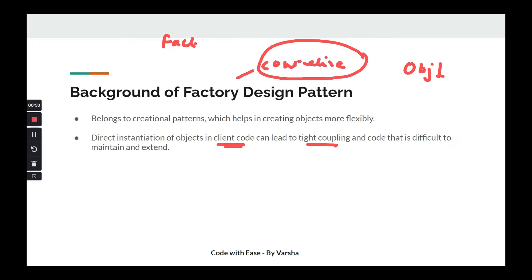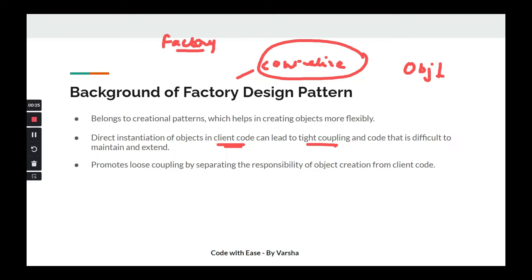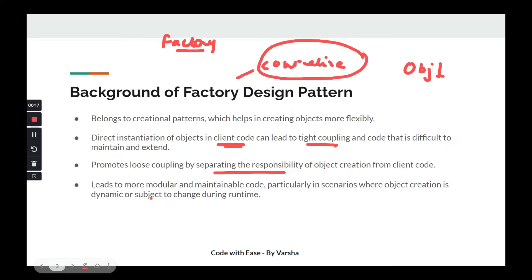To solve the tight coupling problem, we introduce the factory design pattern, which centralizes creation. There is one factory — literally like a manufacturing plant — where the factory class manufactures the objects. As a client, I don't need to know where or how my object is created; I just ask the factory for the object and it gives it to me. This leads to loose coupling: there is a separation of concern between the usage and creation of an object, resulting in more modular and maintainable code through abstraction.